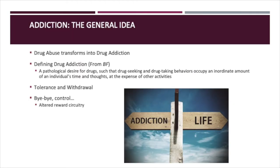The general idea of addiction is that drug abuse transforms into drug addiction, and abuse may alter the structure of various brain circuits and their chemical properties, which sets the stage for dependency. The need for the drug overwhelms any negative consequences associated with drug-seeking behavior. People begin to have tolerance and withdrawal — dependency occurs when you suffer withdrawal symptoms upon stopping a drug, and tolerance occurs when you need a higher dose of the same drug to get the same effect. After all that, your reward circuitry becomes altered and you can lose control.